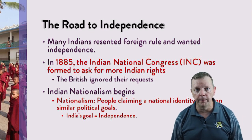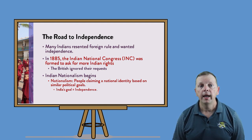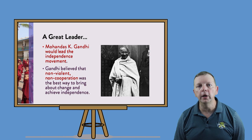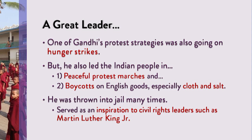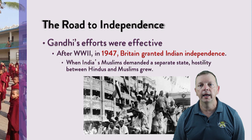This began the Indian nationalism movement. Nationalism is when people claim a national identity based upon political ideas, and India's goal was independence from Britain. India's independence leader was Mohandas Gandhi, who led the movement to independence through non-violent non-cooperation. He would protest the British by going on hunger strikes. He led peaceful protests, such as the famous Salt March. He also led boycotts on English goods, such as cloth and salt. This often caused Gandhi to be thrown in jail. But his devotion to non-violent protests would serve as an inspiration to American civil rights leaders, such as Martin Luther King Jr. Ultimately, Gandhi was successful, and after bearing the cost of the Second World War, Britain finally granted India independence in 1947.